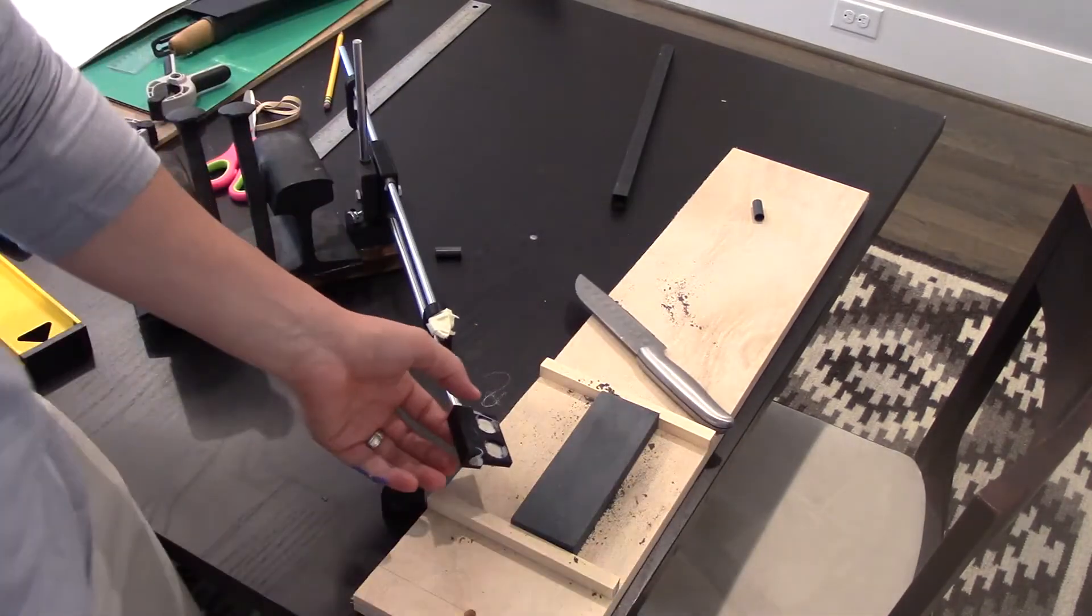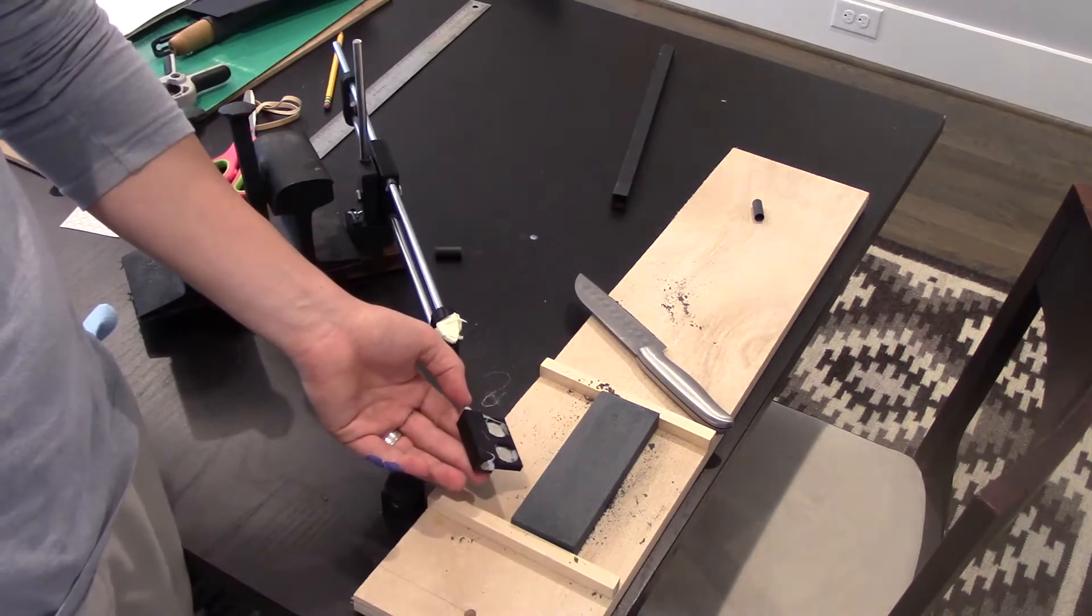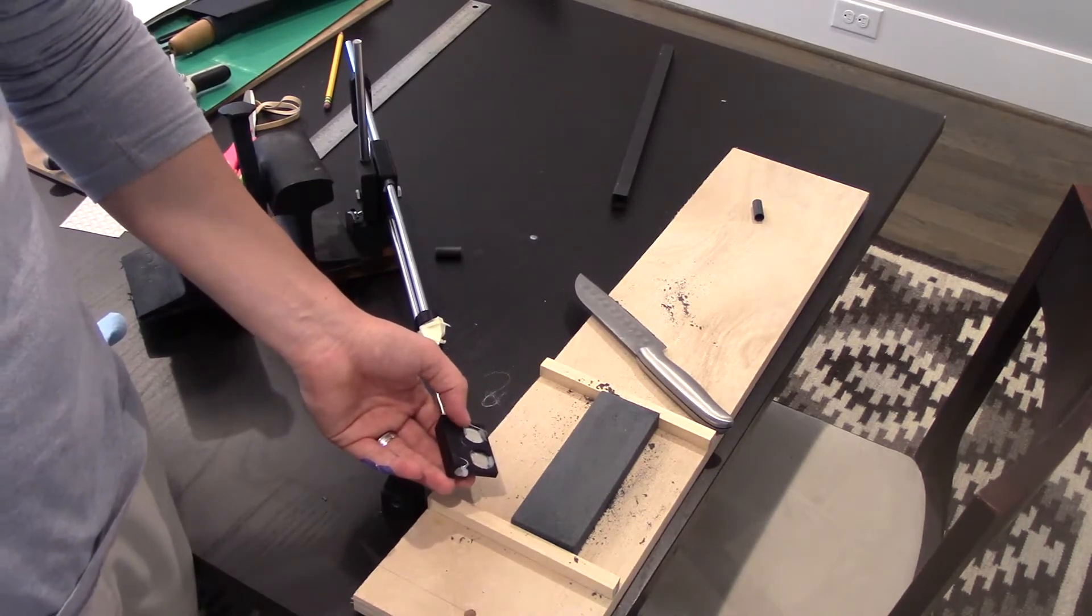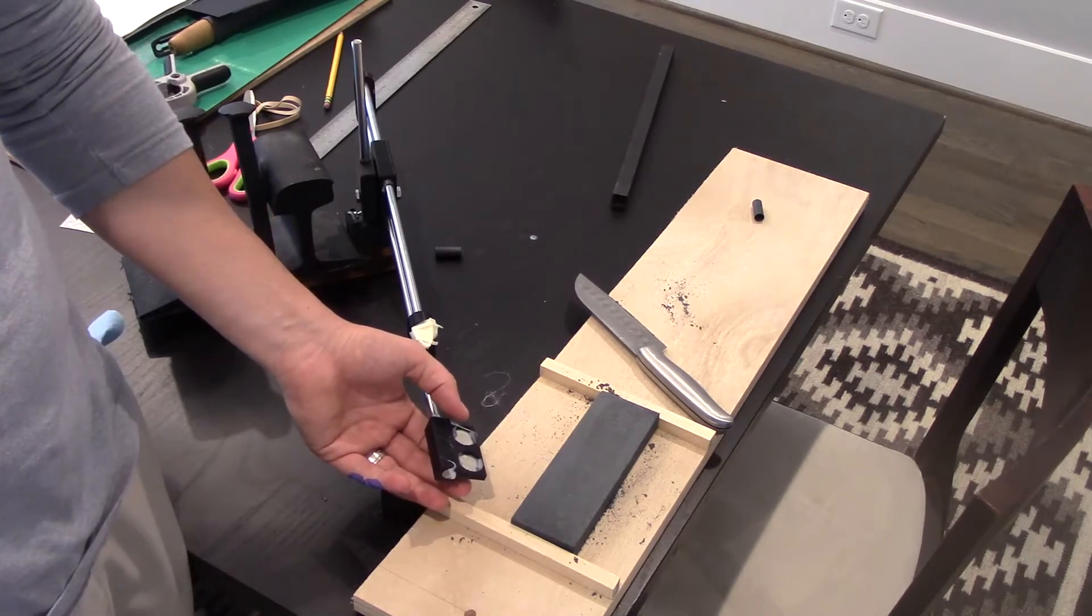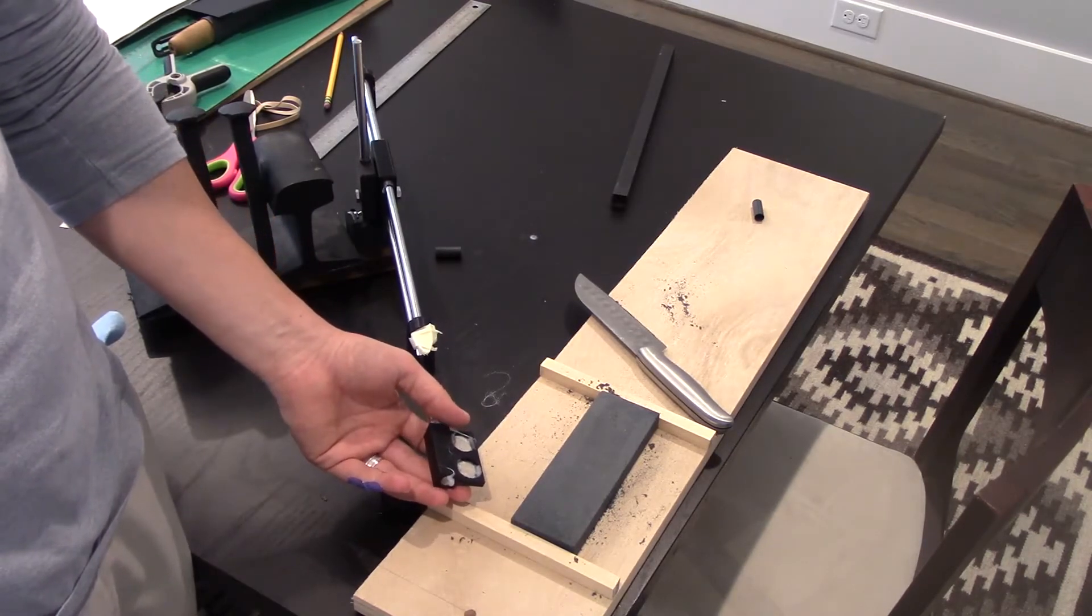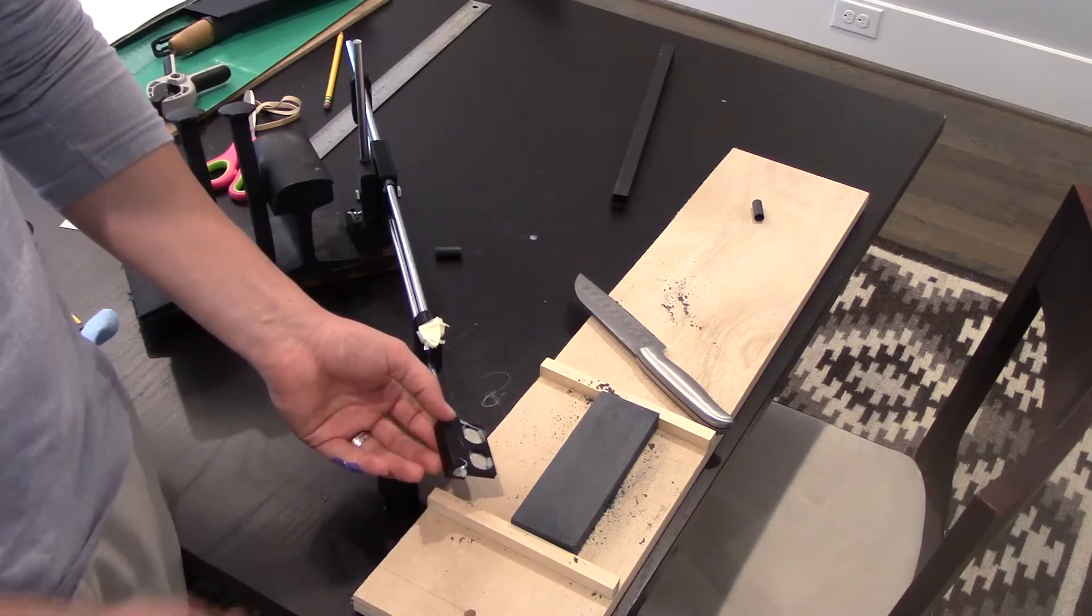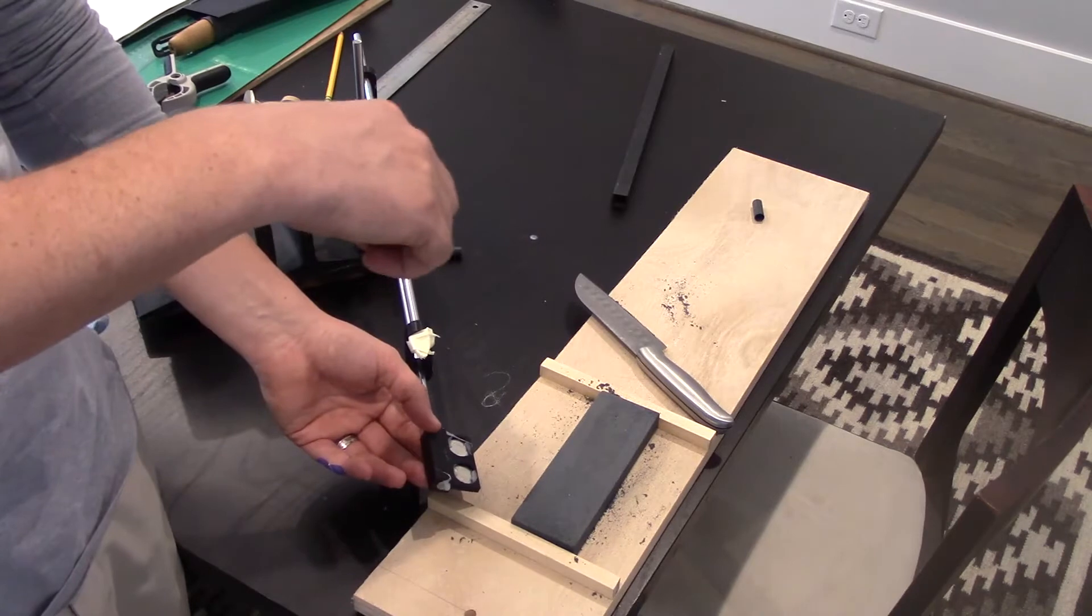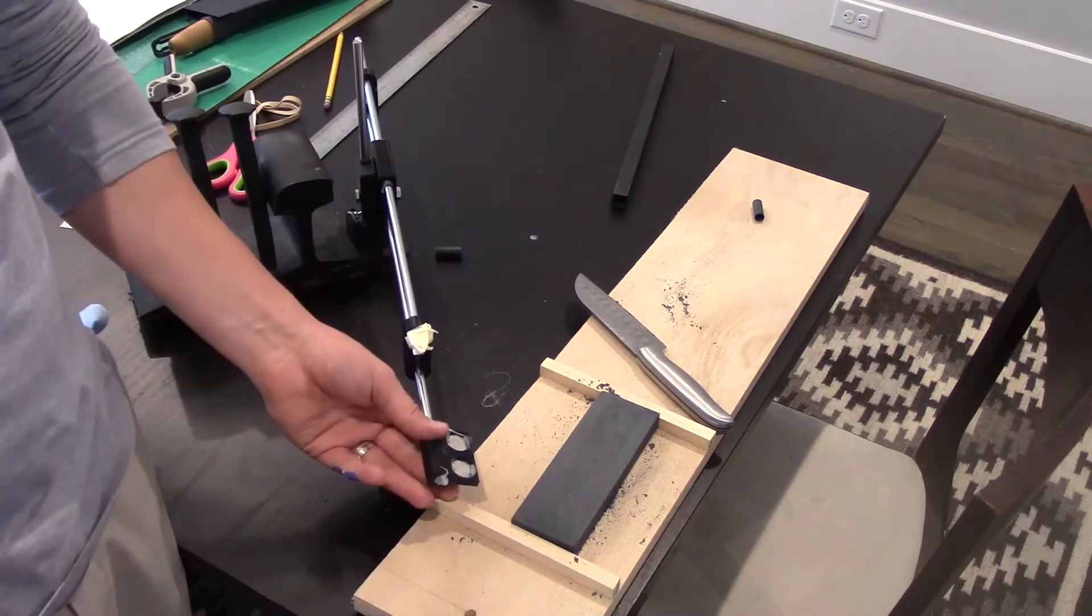Next improvements I make will be an update to the part that holds the knife. I'm going to use a stronger magnet, add probably a rubber pad underneath, and then also make it so it swivels on the z-axis or the vertical axis.